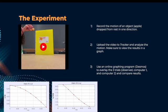Next is the actual experiment. The first step was to record the motion of the object, the apple slice, being dropped from rest in the one direction. Then the video was uploaded to Tracker and the results were plotted into a graph as shown below. And then finally, an online graphing program, Desmos, was used to overlay the three different trials and compare results, and we'll get more into that step later.